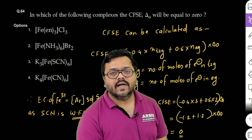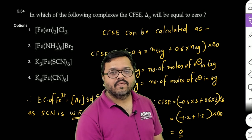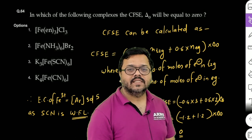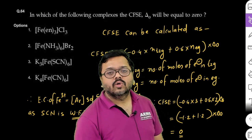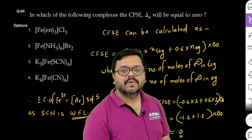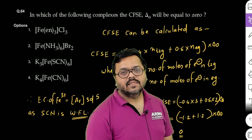To iske hisaab se agar humne calculate kiya, to minus 0.4 into 3 plus 0.6 into 2 into delta O, to minus 1.2 aur idhar aayega plus 1.2 into delta O, to answer hoga 0.